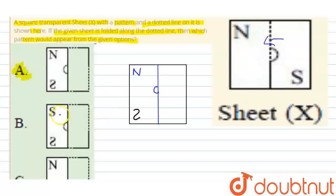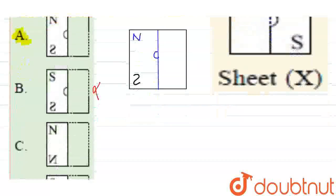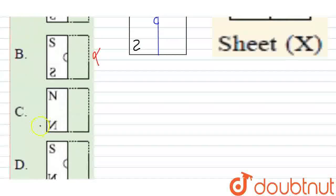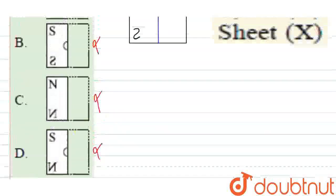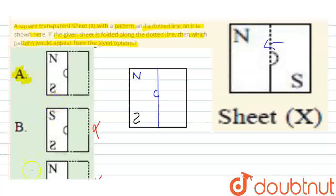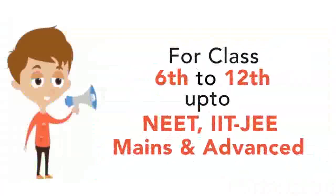Option B, option B S S down, option B same. Option C, option C, this S, that means C option is wrong. Option D, S over and down, option D wrong. So correct option, that option A is correct. Thank you.